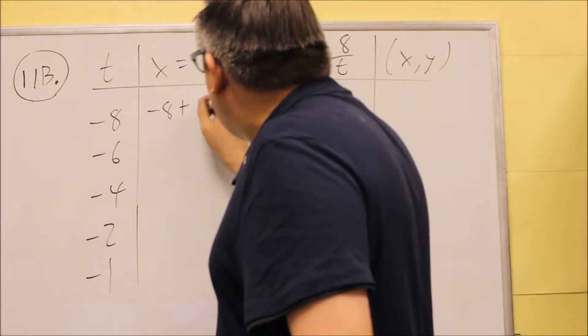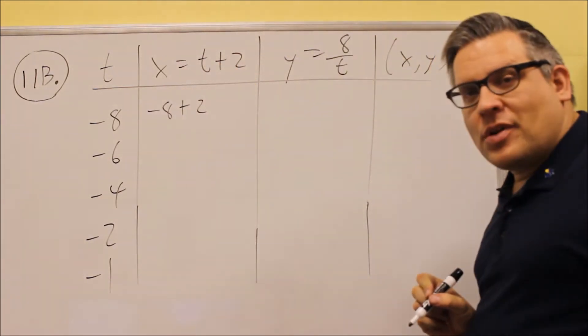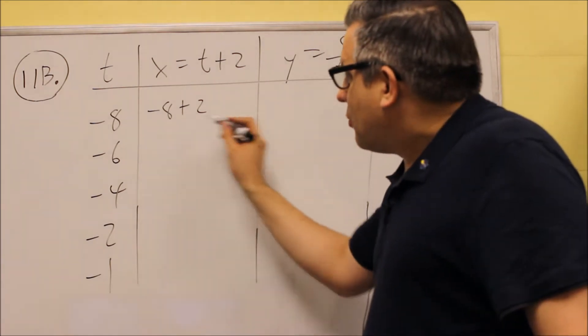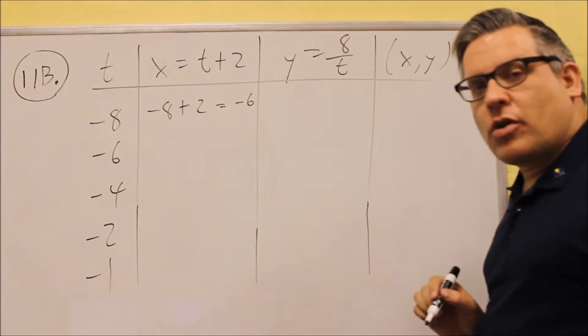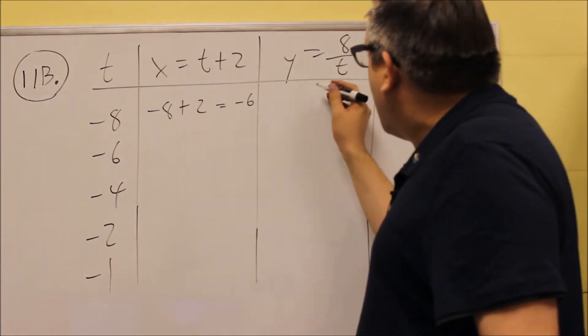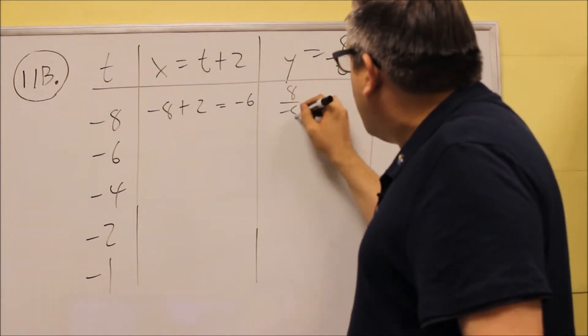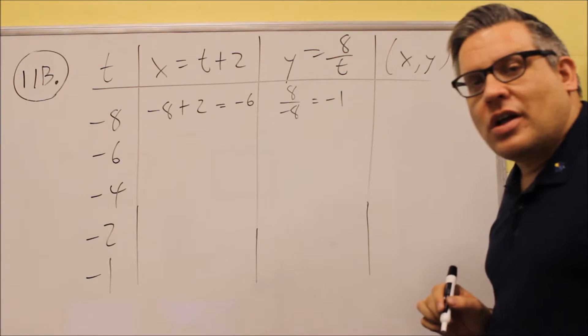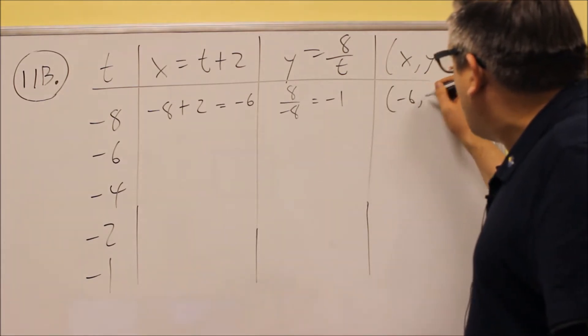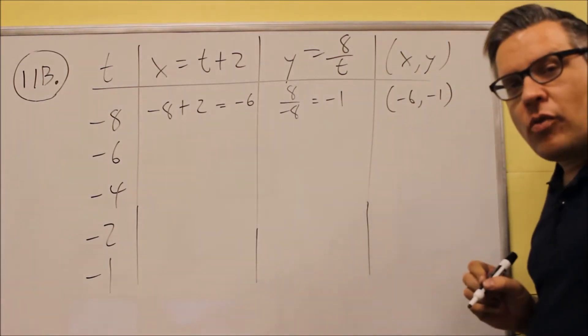On this one we're going to have negative 8 we put in there for t. And so x equals negative 8 plus 2 which is negative 6 we get for that one. For this one we have 8 over negative 8 which is equal to negative 1. So our coordinate would be negative 6, negative 1.